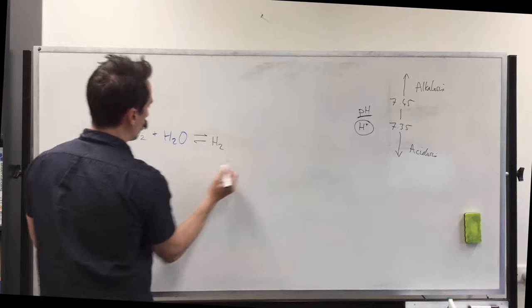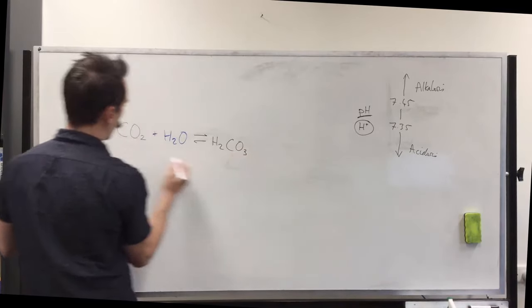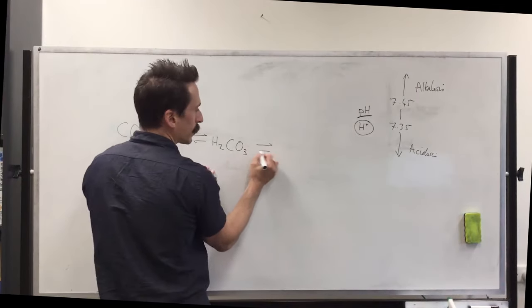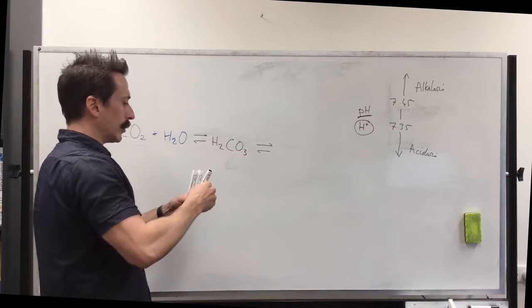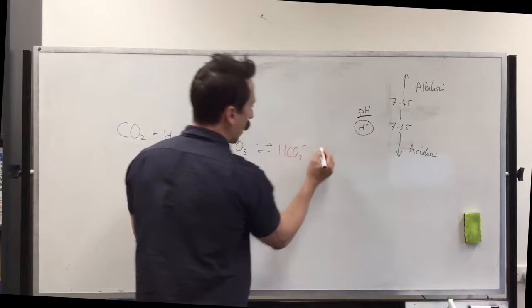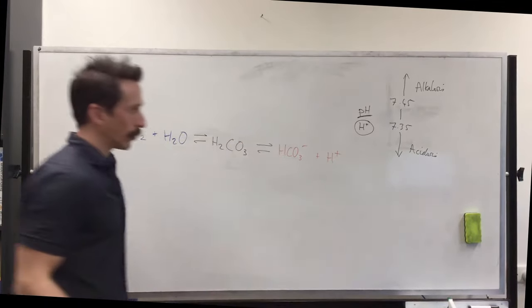The thing it produces is called carbonic acid, which is H2CO3, because there's two there and one there. Now, carbonic acid hates itself and splits itself apart and it produces these two things. It produces bicarbonate ion and it produces hydrogen ions.